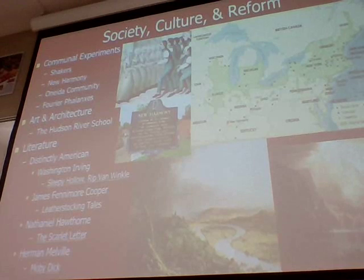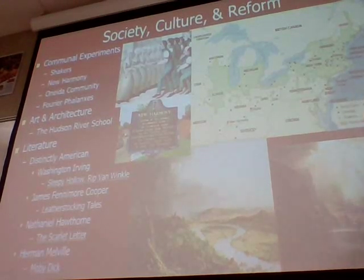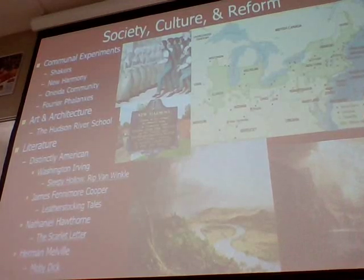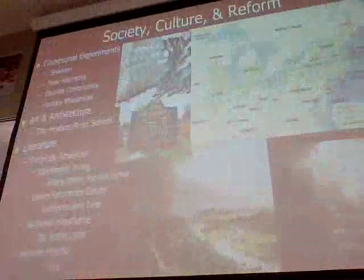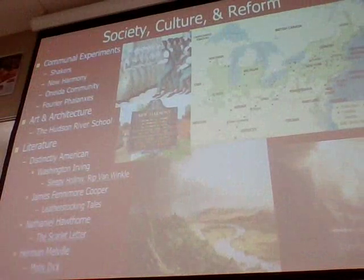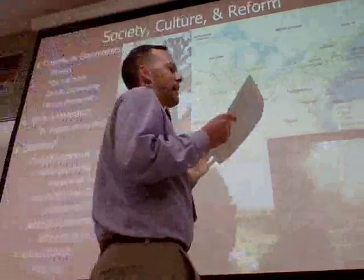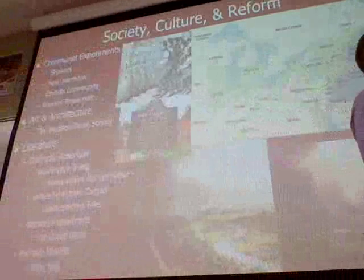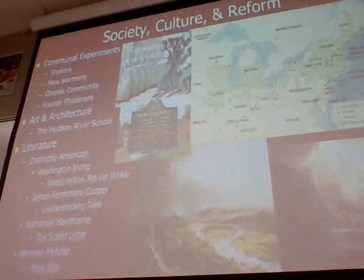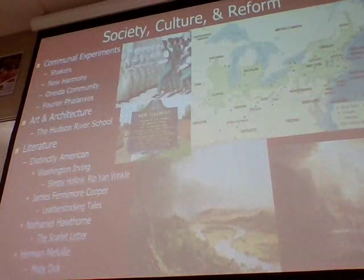One of the most famous early artists is John James Audubon, who painted just down the road at Oakley Plantation. He has very famous, realistic bird paintings — he categorized and depicted a lot of birds in America. Some of those paintings are still here in Louisiana. By the 1830s, art was commonly painting everyday life.